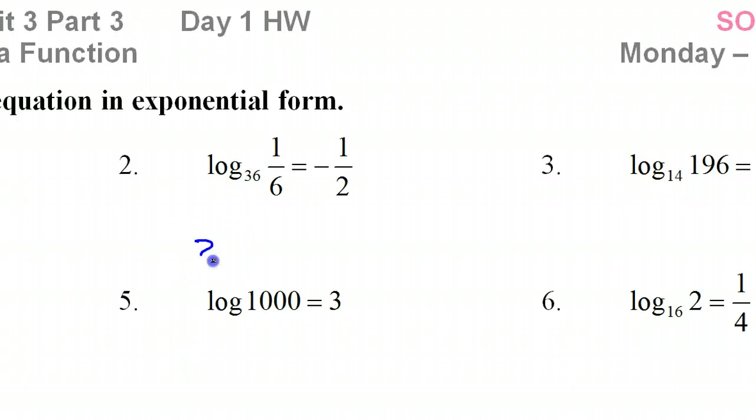Start with the base. The base is 36. And these two sort of switch places. So 36 to the 1 half power equals 1 sixth. Oh, I'm sorry, negative 1 half power.